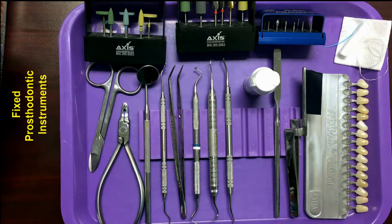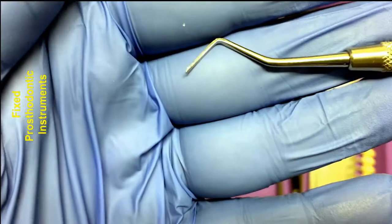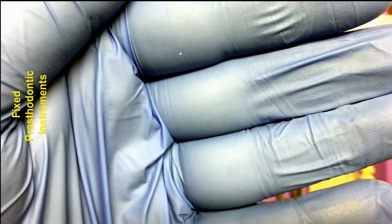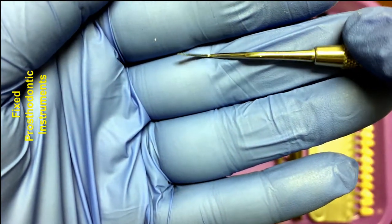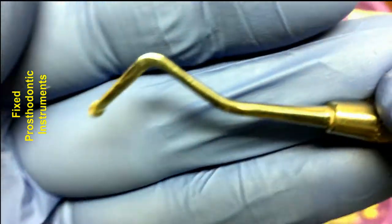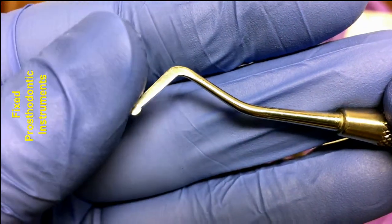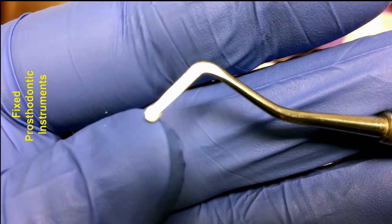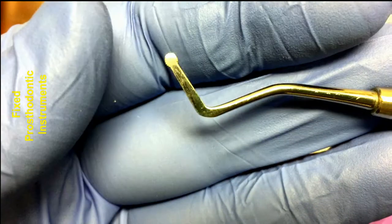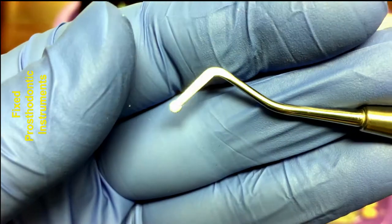Next, we have a cord-placing instrument. Cord-placing instruments are usually double-ended. This one happens to be round shaped. They may be round or square. This one is serrated with little teeth around the outside. They may also be smooth. The purpose is to place the gingival retraction cord into the sulcus. Some operators do not use this and instead use a different instrument such as a spoon excavator or the paddle end of a Woodson instrument.